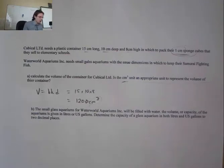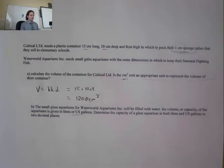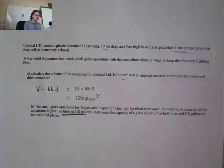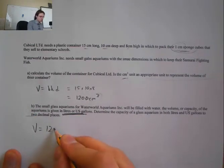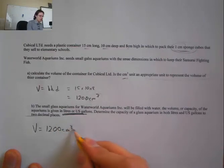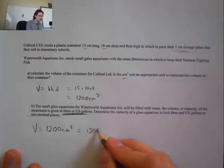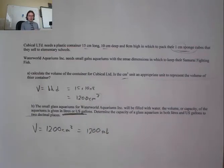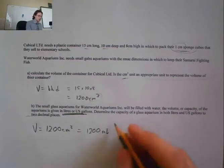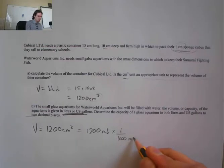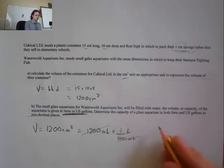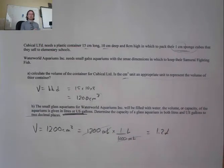The small glass aquarium will be filled with water, and the capacity is given in liters. We know the volume is 1,200 cm³, which is the same as 1,200 milliliters. Since there are 1,000 milliliters in a liter, multiplying by (1 liter / 1,000 mL), the units cancel and we get 1.2 liters of water.